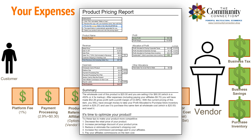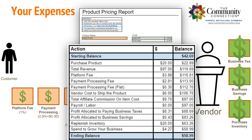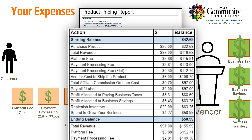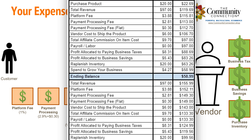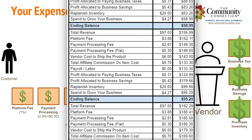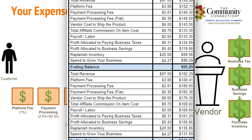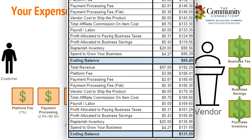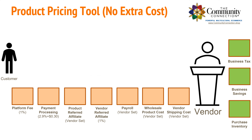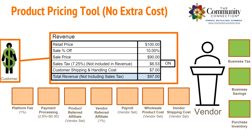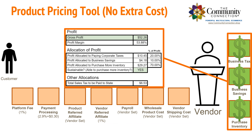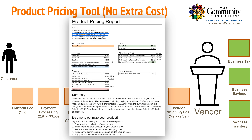Our exclusive ledger report also gives you the control you need to look into the future and see how your bank account balance will improve over time if you sell your product 10, 30, or even 50 times at the price you set. Your product pricing tool will generate a report of your product's revenue, expenses, and profit, including a summary and tips to optimize your pricing so you can maximize its performance and your bottom line.